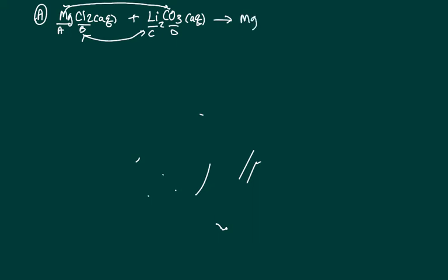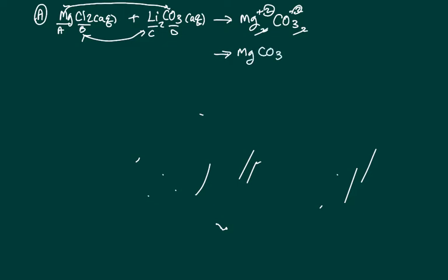Magnesium will be positive 2 because it's in group 2A. It hooks up with the carbonate, which is negative 2. When we do the crisscross rule, we bring the 2 down for each — but it's a 1-to-1 ratio, so we don't need subscripts since it must simplify to the simplest whole number ratio.